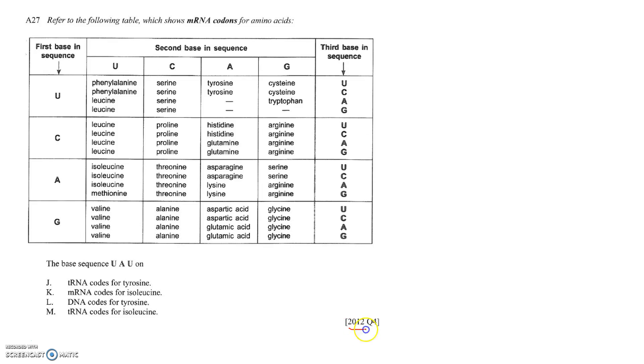The next question is from 2012, question 4. It says refer to the following table which shows mRNA codons for amino acids. Whenever we see the genetic code like this, these codons are always the mRNA, not the tRNA.